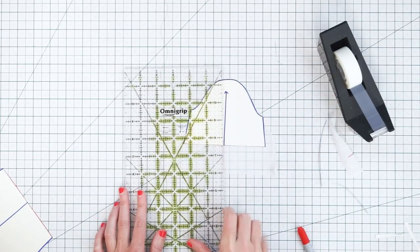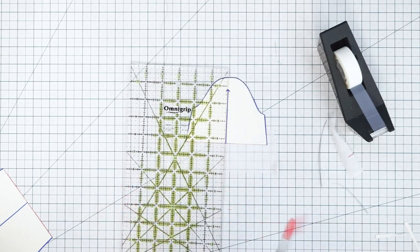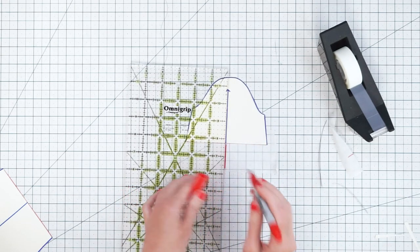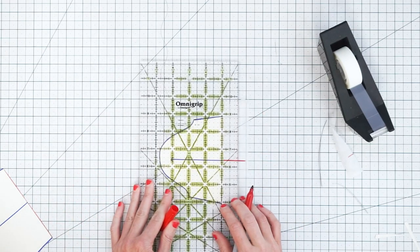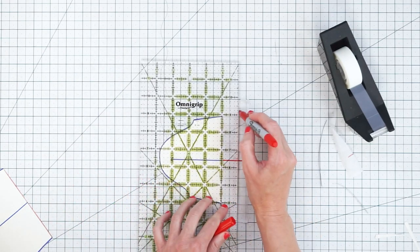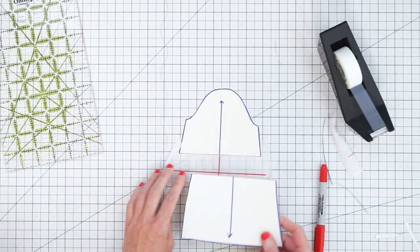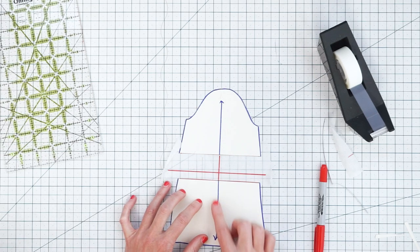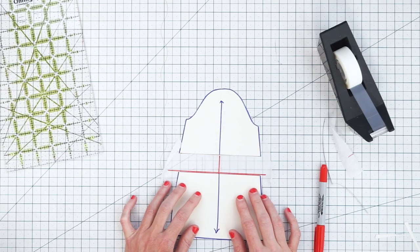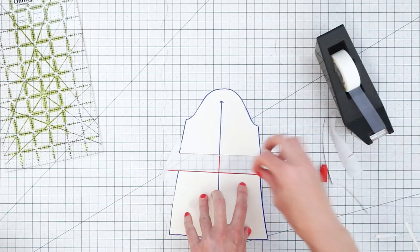Then you want to extend your grain line onto the scrap of paper and mark how far you want to lengthen your sleeve. Then you take this bottom part of your sleeve and you just line it up with those two lines. The grain line needs to be straight with the grain line and the cut edge with our guide and you tape it in place.